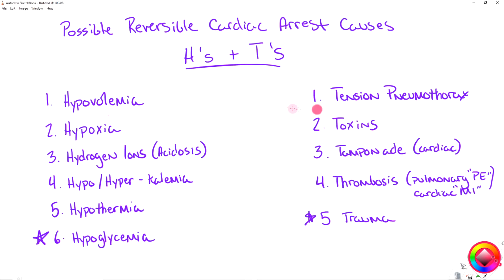Moving over to the T side, we start with tension pneumothorax. This is where you have a hole in your lung — the pneumothorax — and air is getting into the pleural cavity, causing increased pressure and pushing the organs towards the other side of the chest. It could crush the aorta, the heart, the lungs, everything in the thoracic cage, causing a decrease in perfusion and ultimately cardiac arrest.